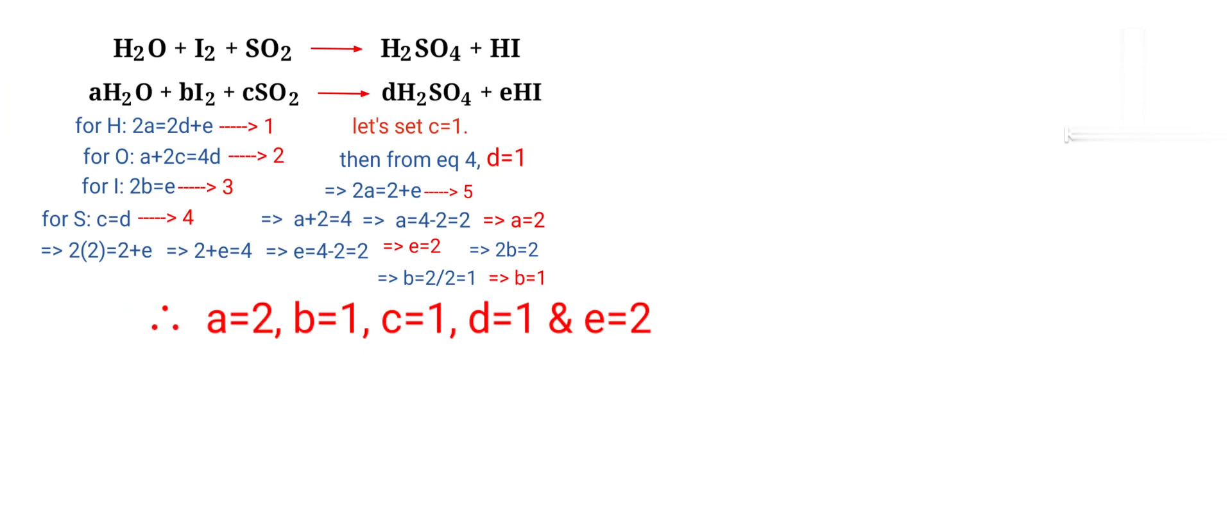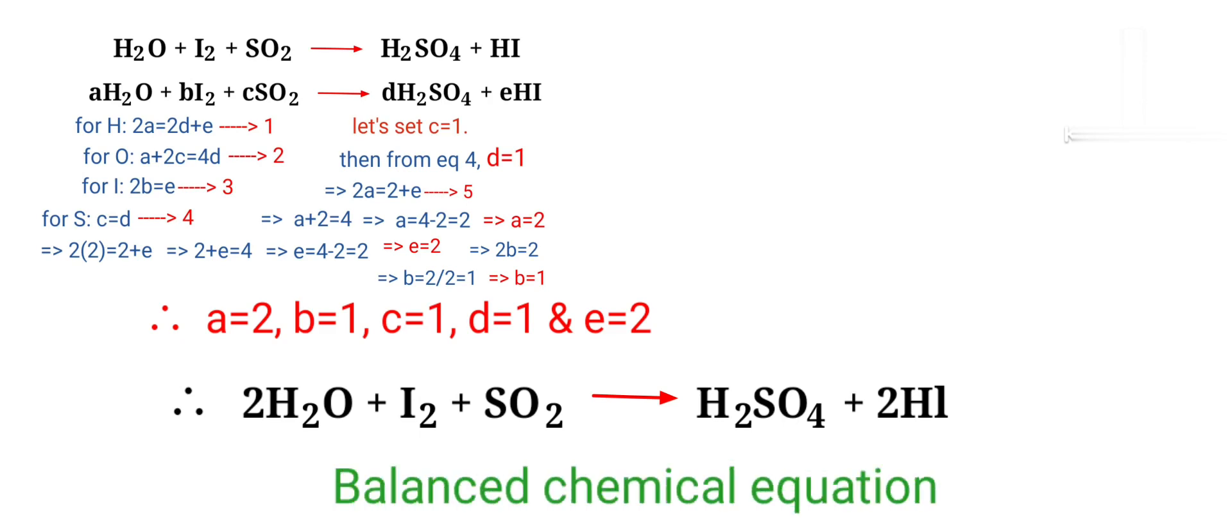Now you can apply A, B, C, D, and E values in the equation. Therefore 2H2O plus I2 plus SO2 gives us H2SO4 plus 2HI. The equation is now balanced.